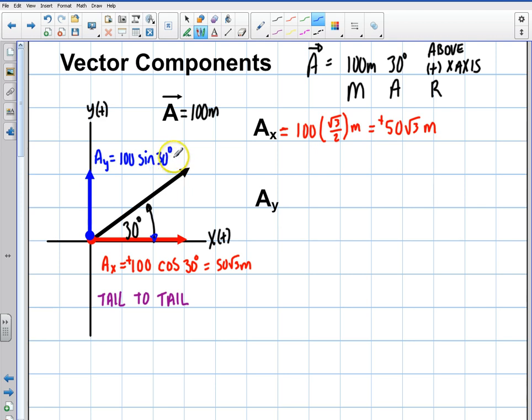What's sine of 30? Sine of 30 is 1 half. So it's 100 times 1 half. So what does that give me? Well, quite simply, that gives me, I'll just write it out here, 100 times 1 half meters. Or it simply gives me 50 meters.